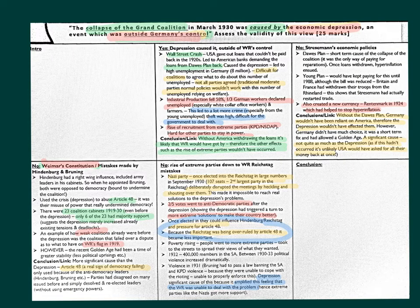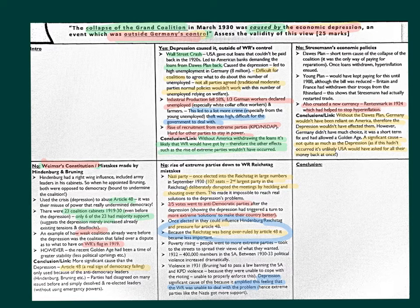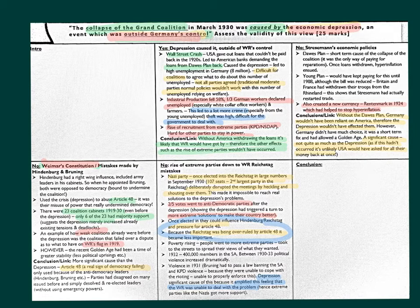So yes, the collapse of the Grand Coalition was partly caused by the economic depression, but it wasn't entirely outside of Germany's control. Germany chose to elect more extreme parties. Germany chose to adopt a constitution which had undemocratic elements within it, like Article 48. Germans chose to elect Hindenburg as president — a right-wing, anti-democratic individual. Whilst the economic depression did amplify existing feelings that the Weimar Republic was unable to deal with problems, the collapse of the Grand Coalition wasn't something entirely outside of Germany's control. That's the end of this short revision session — best of luck with your revision.